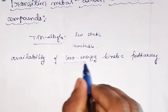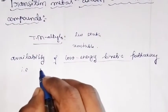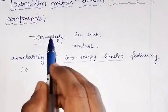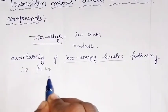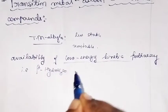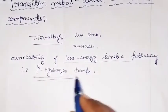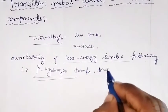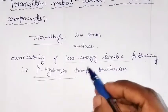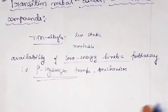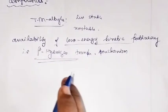What do we mean by this low energy kinetic pathway? In the case of transition metal alkyls, there is a possibility of a beta hydrogen transfer mechanism. Because of this reason, the transition metal alkyls are usually unstable. Now we will see what the beta hydrogen transfer mechanism is.